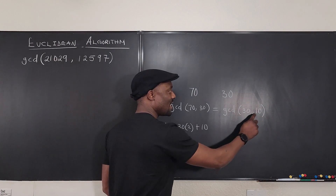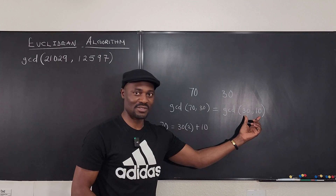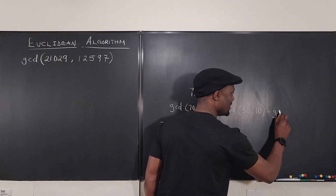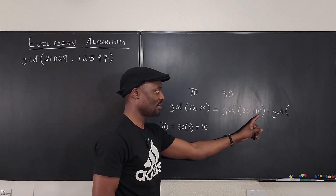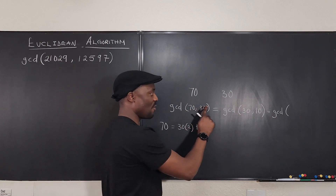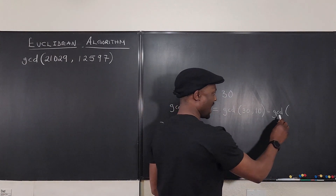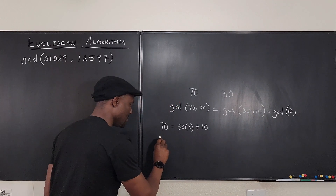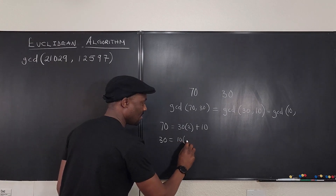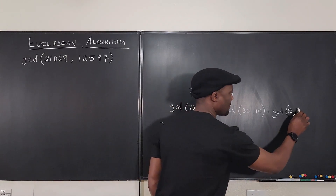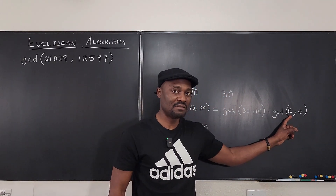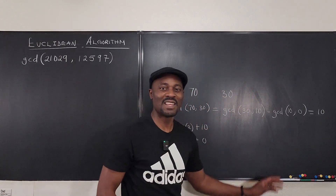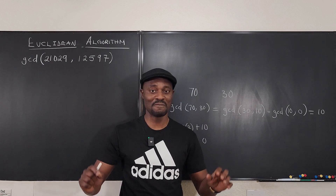So the biggest number that can divide 70 and 30 is also the biggest number that can divide 30 and the remainder 10. Now what is the biggest number that can divide 30 and 10? We apply the same step: 30 equals 10 multiplied by 3, with remainder 0. What's the biggest number that divides 10 and also divides 0? It has to be 10 — that's the answer.